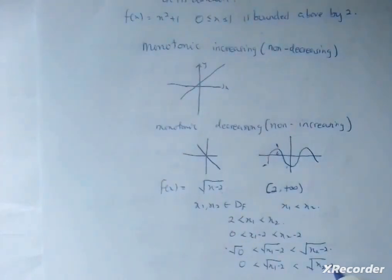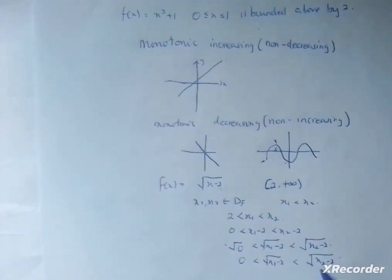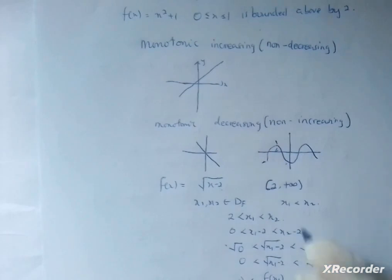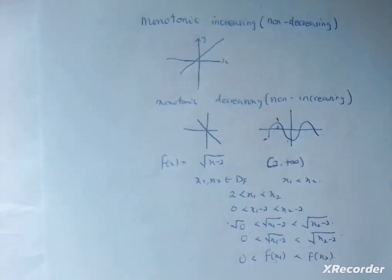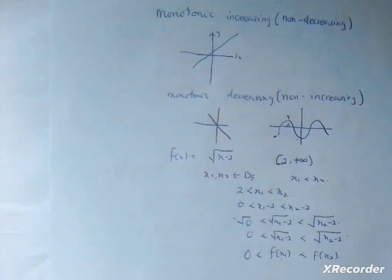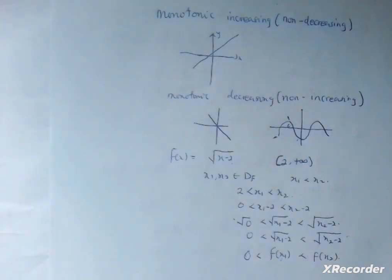From this we can see that the first expression is f(x₁) and the second is f(x₂), and clearly f(x₁) < f(x₂). Therefore, since x₁ < x₂ implies f(x₁) < f(x₂), we conclude that f(x) = √(x − 2) is a monotonic increasing function. That is how we prove a function is monotonically increasing.